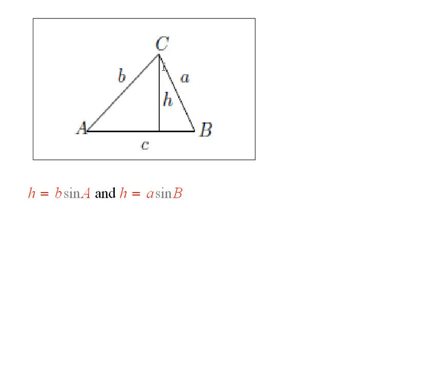Then we can draw a perpendicular line from the vertex at C down to this base here, like is shown. So this line meets this line in two right angles.